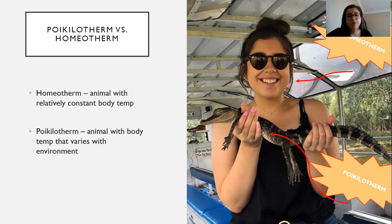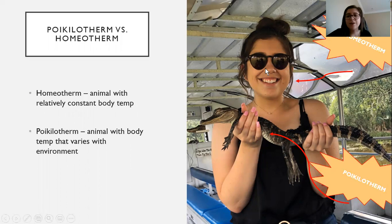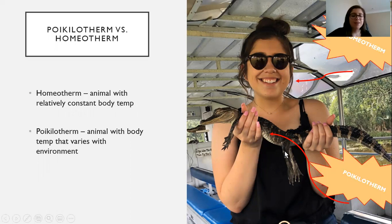Next we're going to talk about poikilotherms versus homeotherms. Homeotherms keep a relatively constant body temperature — humans have to stay at around 98 degrees Fahrenheit or we have serious complications. I'm a little homeotherm with a body temperature of about 98 degrees. The alligator in my hands is a poikilotherm — their temperature varies with the surrounding environment. If the lake is colder one day, their body will acclimate to that temperature so they can survive.